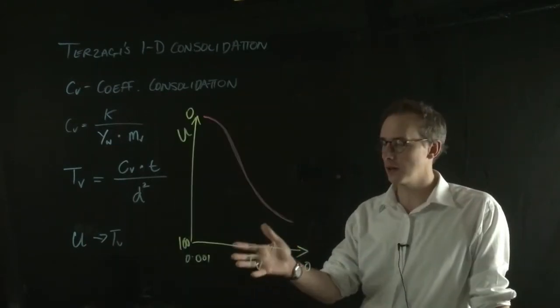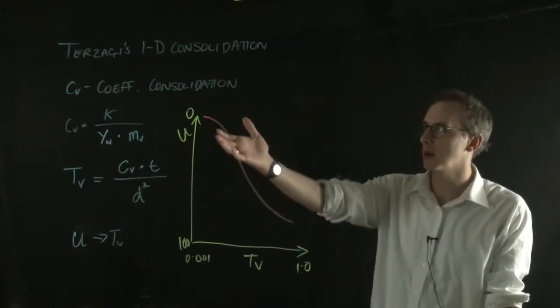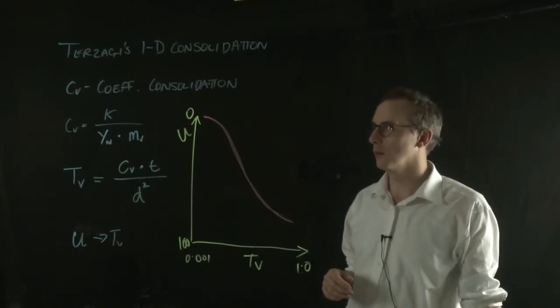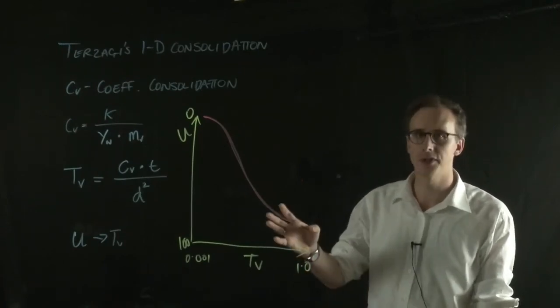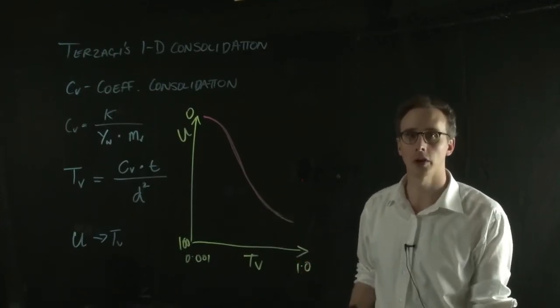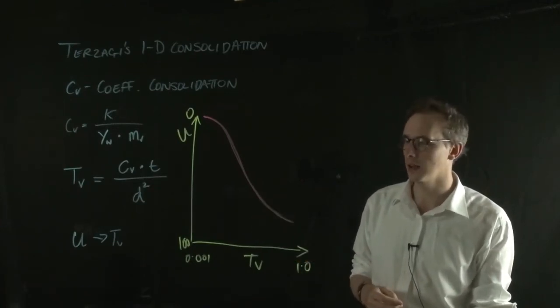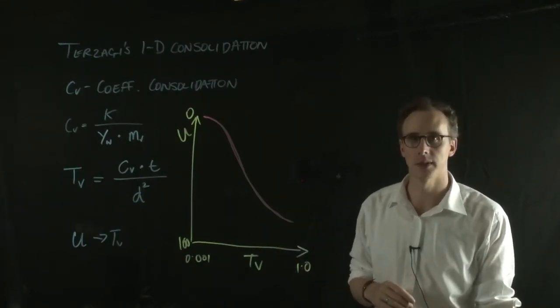Before we move on, the relationship between TV and your degree of consolidation looks something like this, where there's a curve that relates the two together. You can see that it's not linear, and there's a bunch of equations that govern this relationship, so you can draw more than one curve. I've provided a link on my website to a more detailed explanation of those curves.